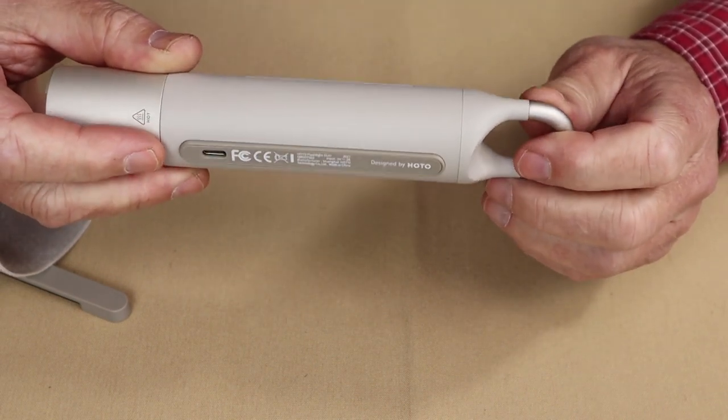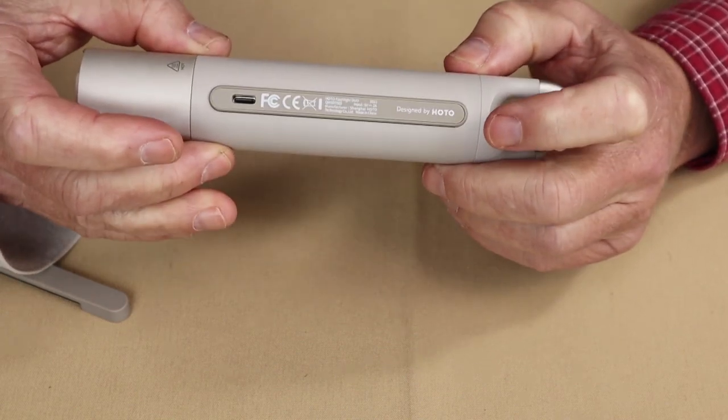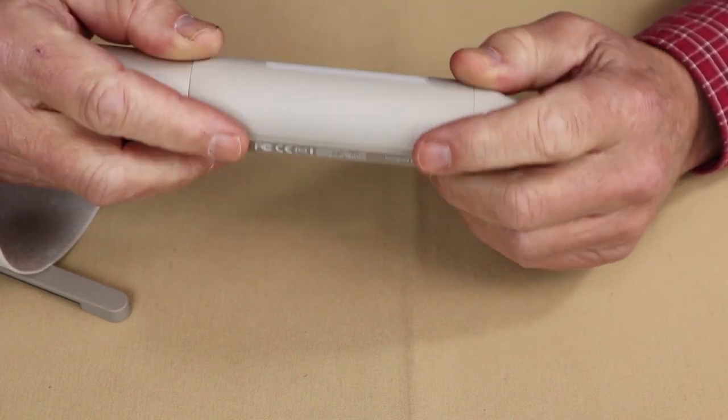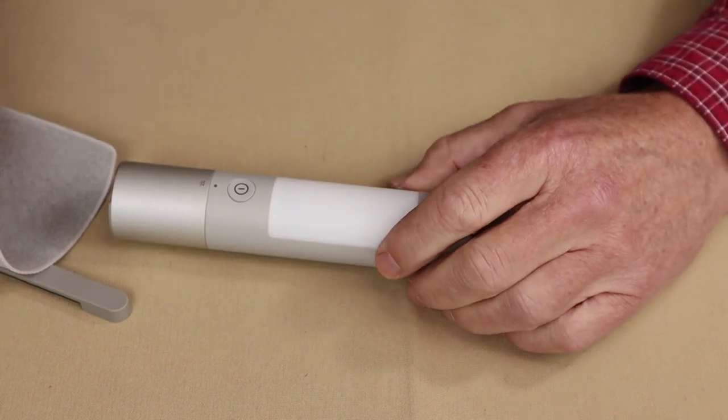And then you can use the work light application on this side. Now let me just put this back together to show you how it would function for wrapping around something.